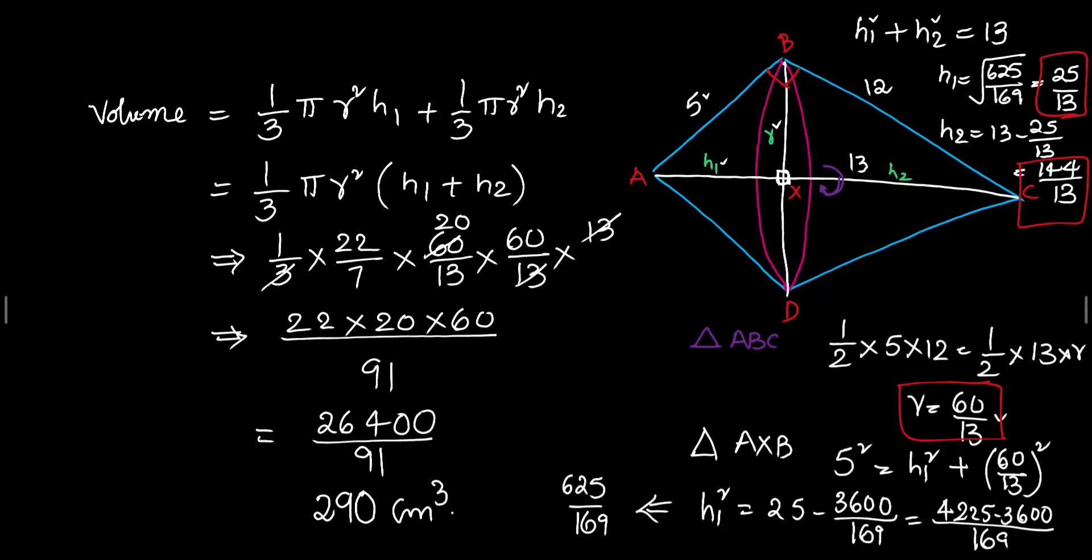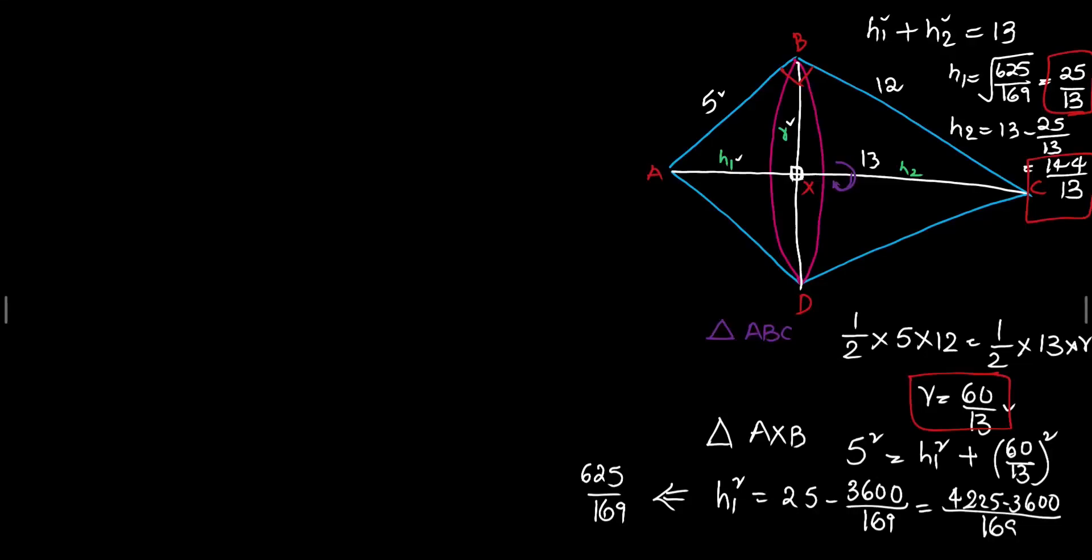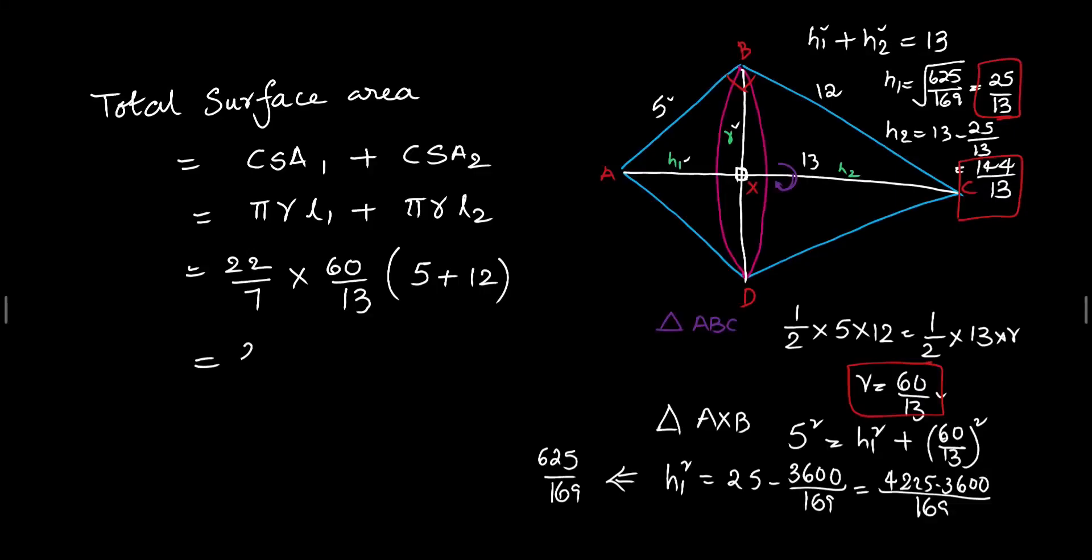Try to find out what will be the total surface area now. Total surface area equals to CSA of 1st cone plus CSA of 2nd cone. What is the formula here? Pi R into L1 plus here pi R into L2 but pi R is common. So, let us substitute the values 22 by 7 into R that is 60 by 13. We can take that common. Then left out is L1 plus L2. What is L1? 5. What is L2? 12. We need to simplify this. So, this will be 22 by 7 into 60 by 13 into 17.